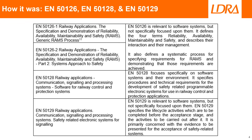Different industries require different standards because there are significant differences between them. For example, the number of cars produced compared to railway signalling systems makes proven-in-service more convincing in the former sector. Another factor is that all of these industries had best practices before functional safety standards came about, and it would not have been sensible to ditch them completely.